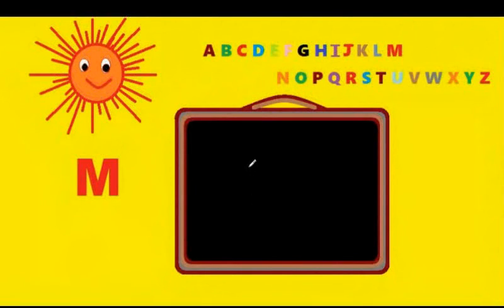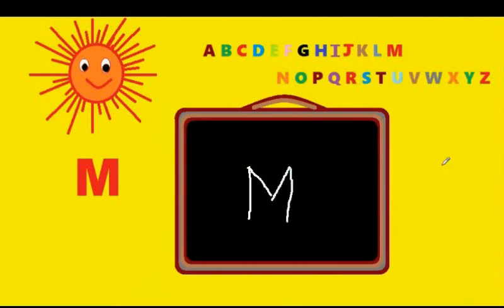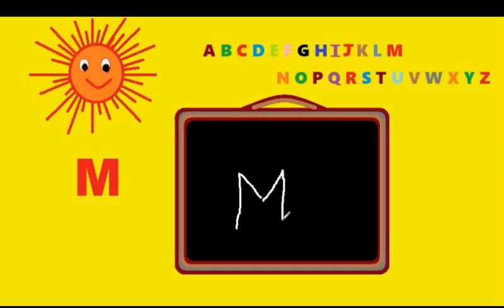And M. You have to come down the street, down the mountain, down the mountain, down the street. You have to draw a standing line, a line that goes from left to right, a line from right to left, and down the street. That's M. M is for moon.